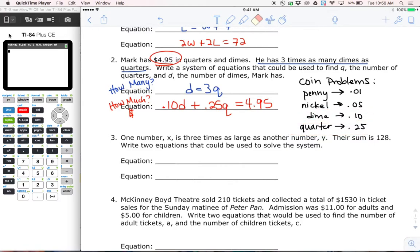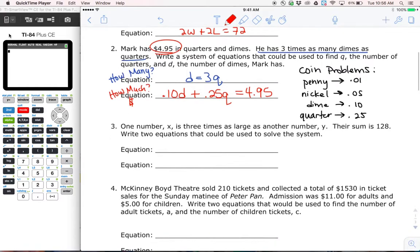Alright. And that's how we would set this up. We've got d and q in both equations, and we'd have two separate equations that we would use to solve. This one would also be solved using substitution, or at least that's how it's set up.